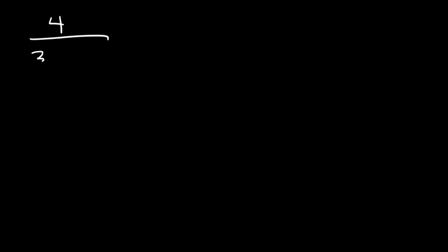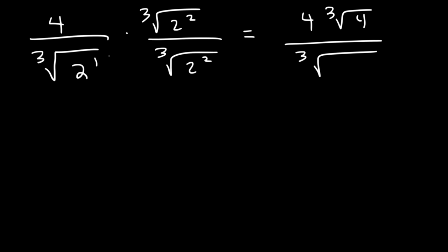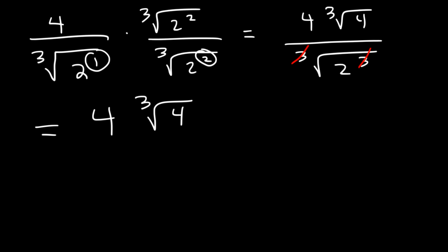Let's try another example: 1 over 4 times the cube root of 2. We need to multiply the top and the bottom by the cube root of 2 squared, so we can get a total of three 2s on the bottom. 2 squared is 4. On the bottom, 1 plus 2 is 3, giving us 2 to the third. The cube root of 8 is simply 2. So this is 4 times the cube root of 4 divided by 2, which simplifies to 2 cube root of 4.